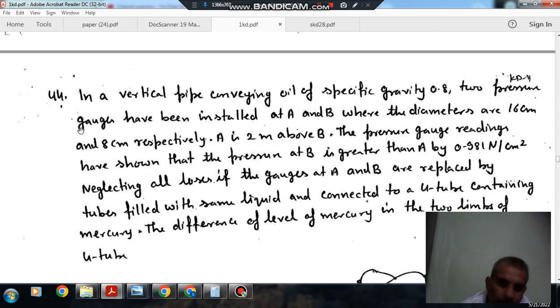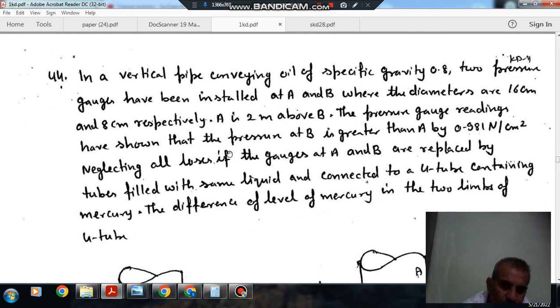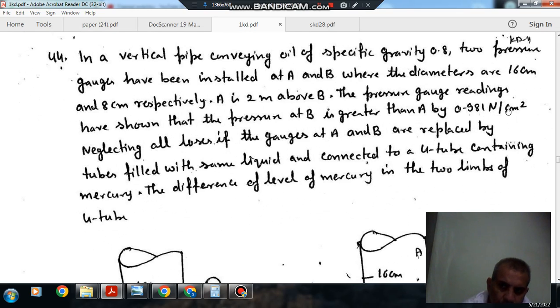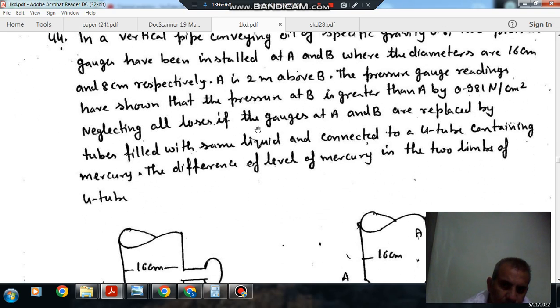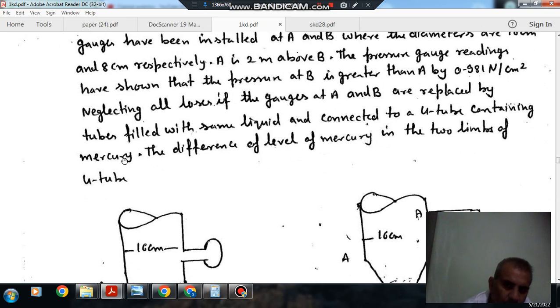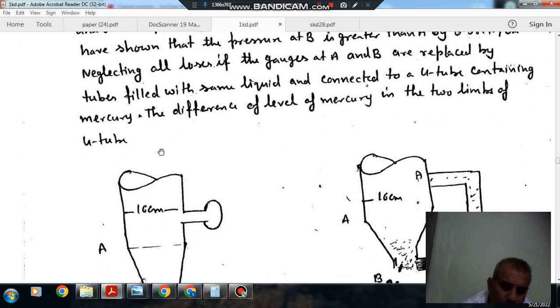Next, in a vertical pipe carrying oil of specific gravity 0.8, two pressure gauges have been installed at A and B, where the diameters are 16 cm and 8 cm respectively. A is 2 meters above B. The pressure gauge readings have shown that the pressure at B is greater than A by 0.981 newton per cm square. Neglecting all losses, if the pressure gauges at A and B are replaced by tubes filled with same liquid and connected to a U-tube containing mercury.